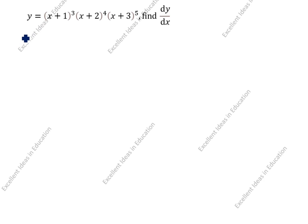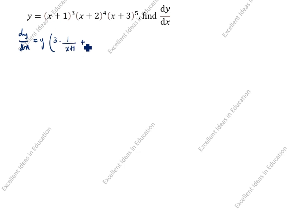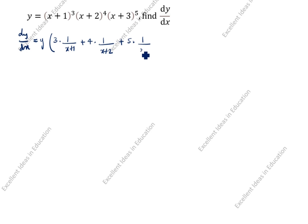How we will differentiate this: dy/dx is equal to — write y as it is, then open the bracket. Power 3 is given, so write 3 into numerator; (x+1) comes in denominator, giving 1/(x+1). Plus, power is 4, so write 4 into (x+2) — giving 1/(x+2) in denominator. Plus, power is 5, so write 5 into (x+3) — giving 1/(x+3) in denominator.